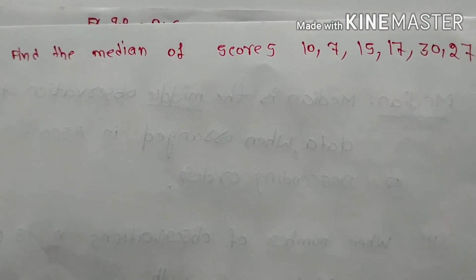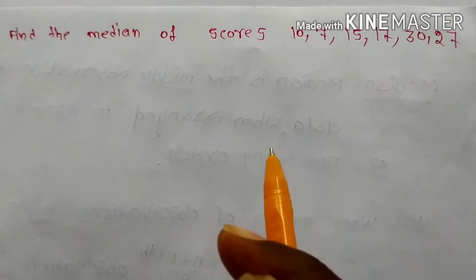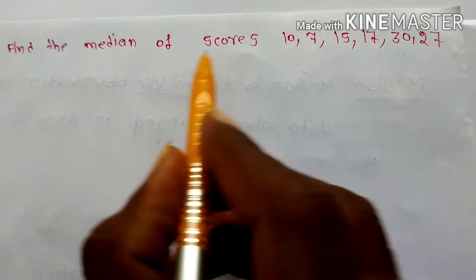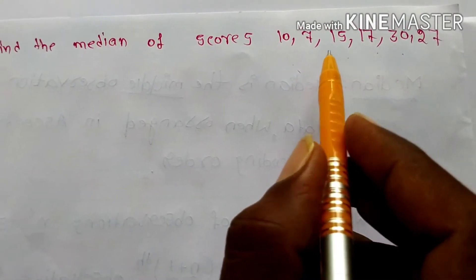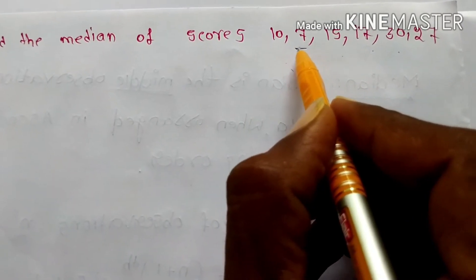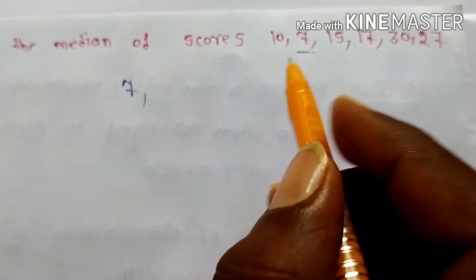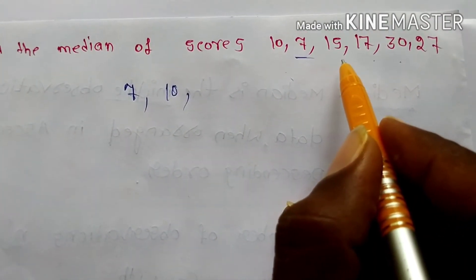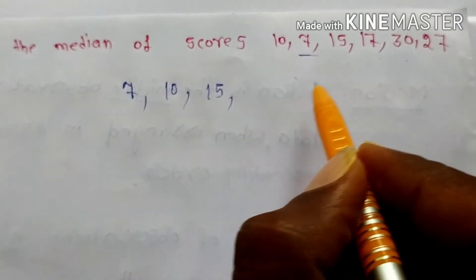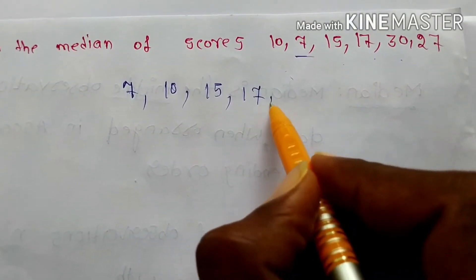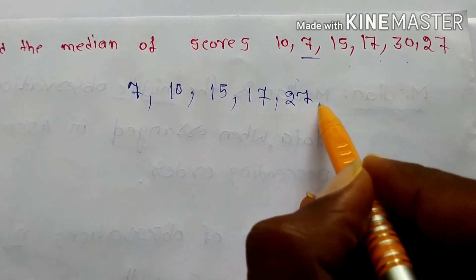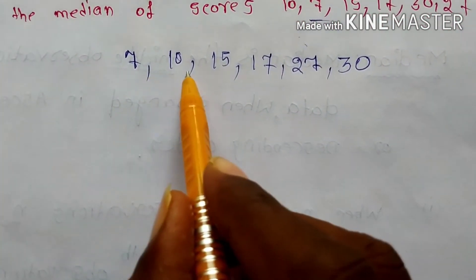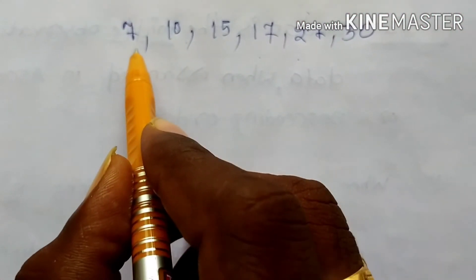Now find the median of the scores: 10, 7, 15, 17, 30, 27. First write them in ascending order: 7, 10, 15, 17, 27, 30.